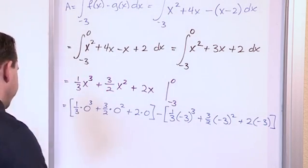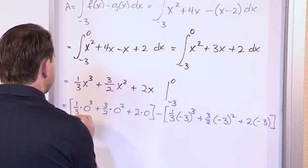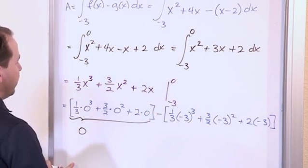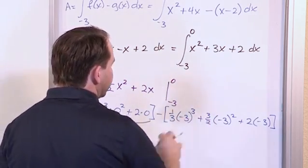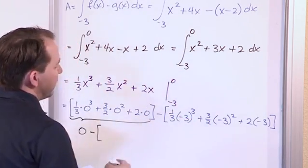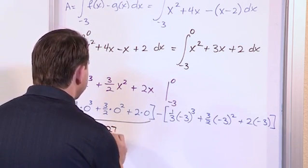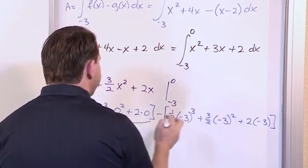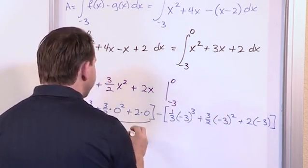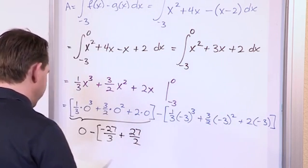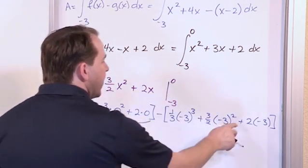So really all we have to do is simplify all this stuff. So what we have, all of this stuff just becomes 0. And then we have minus, keep everything in the brackets for now, because I don't want to confuse myself. Negative 3 cubed, negative 3 times negative 3 times negative 3 is going to give me negative 27, and it's over 3 because of this. Negative 3 squared is positive 9, but positive 9 times 3 is also positive 27. So I have 27 over 2 there. And then here I have negative 6.